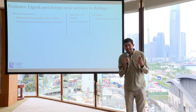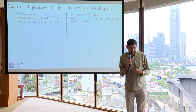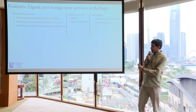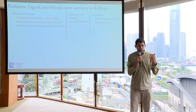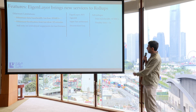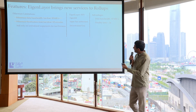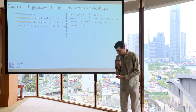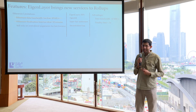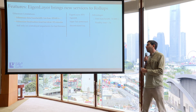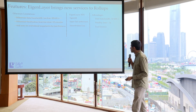Those can be built as EigenLayer AVSs that you can simply integrate. On centralized sequencers — if you have a single node you're trusting for ensuring correctness — you can now build decentralized sequencers. AltLayer has decentralized sequencing in the restaked rollup. Other projects like Espresso have shared decentralized sequencers used across many rollups.